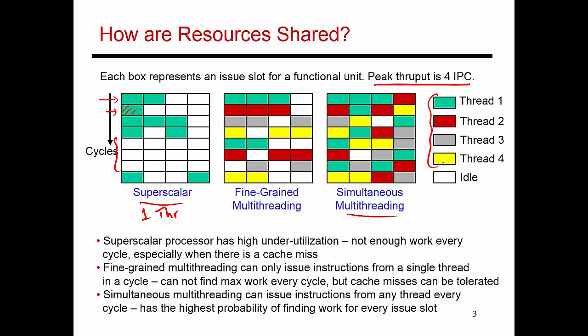The pipeline in any cycle can find instructions from any one of these threads to execute. So in this cycle here, all four ALUs are busy, and each ALU is executing an instruction from a different thread. The underutilization, which in this example only happens in two cases, is relatively low.